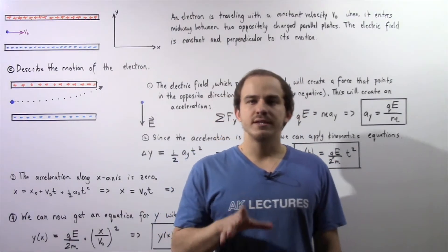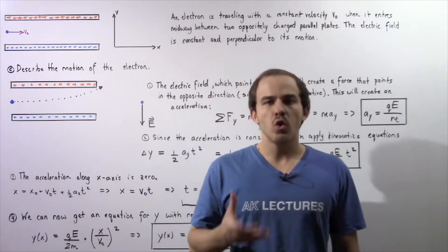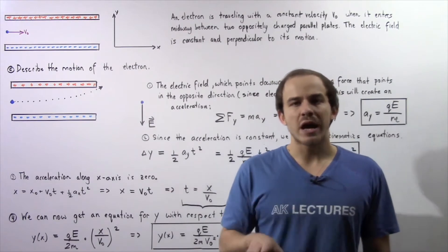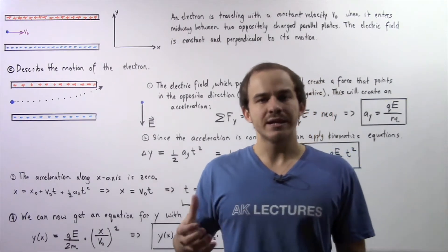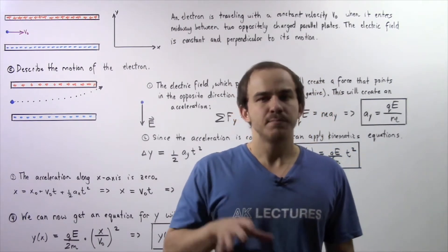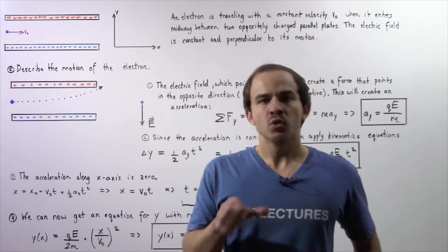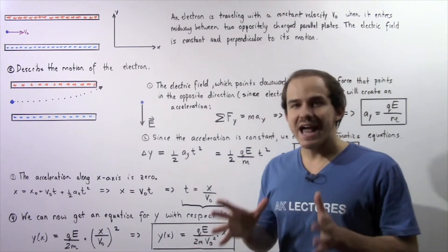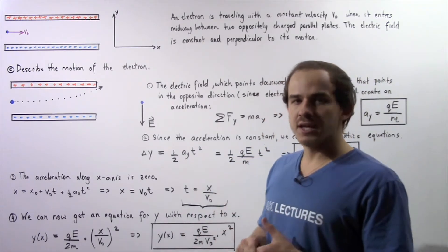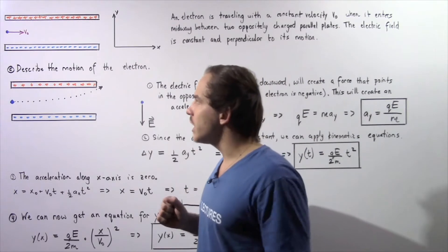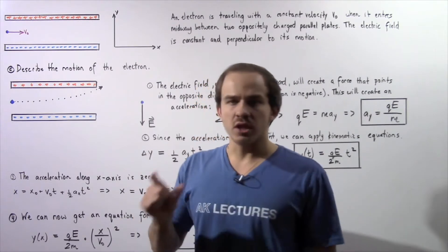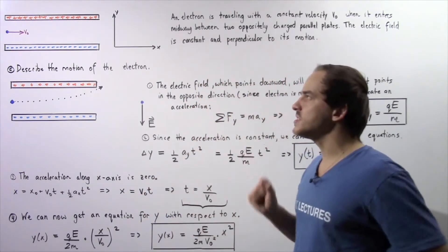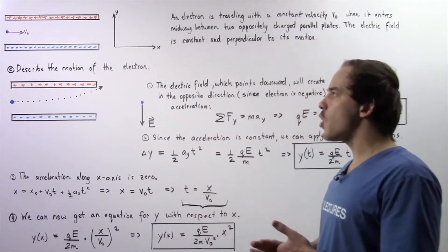In the previous lecture, we discussed the motion of an electron when that electron was traveling in an electric field that pointed parallel with respect to the motion of that electron. Now we're going to discuss the motion of an electron in which the electric field points perpendicularly with respect to its motion.